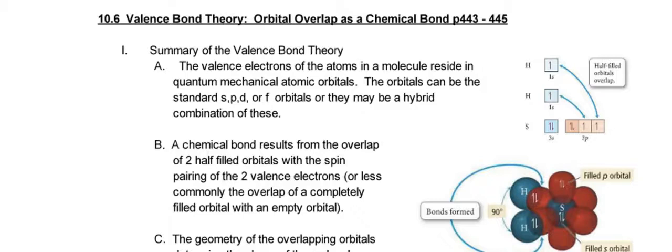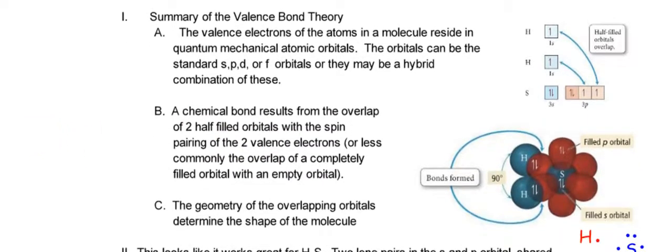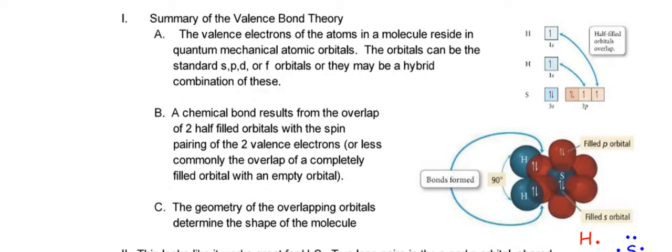A chemical bond, so this is what a bond is, results from the overlap of two half-filled orbitals with the spin pairing of the two valence electrons, or less commonly, the overlap of a completely filled orbital with an empty orbital. And it's the same exact kind of a bond as you would of two half-filled. So when we do electron configurations, you have a single arrow going up for each case. So again, results from the overlap of two half-filled orbitals with a spin pairing of two valence electrons. So then the geometry of the overlapping orbitals will determine the shape. That's what we've been doing in Chapter 10 so far.